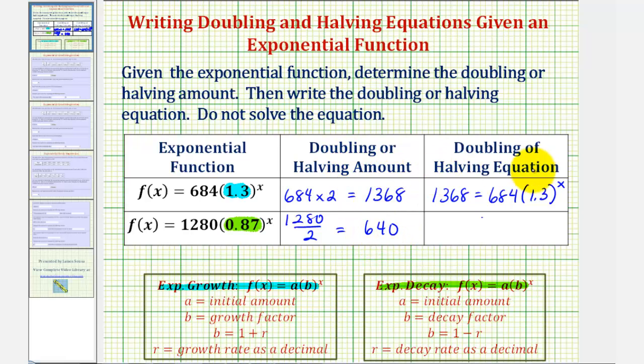So to set up the halving equation, we want the output to be 640, which would give us the equation 640 equals 1,280 times 0.87 raised to the power of x. Notice the value of x that solves this equation would give us an output that's half of the initial value.